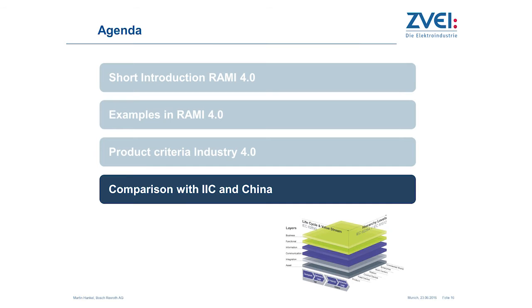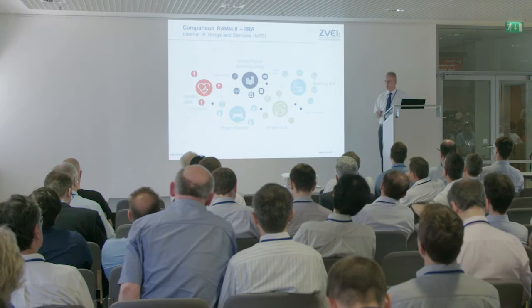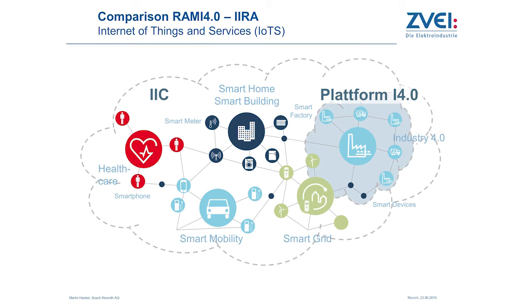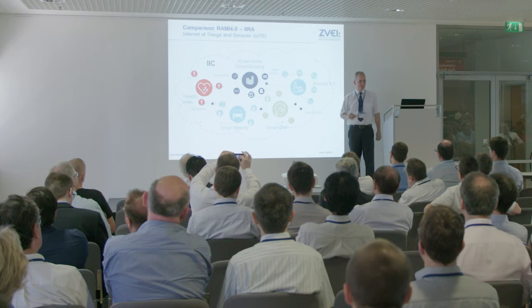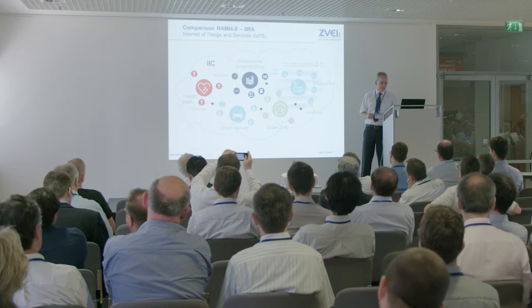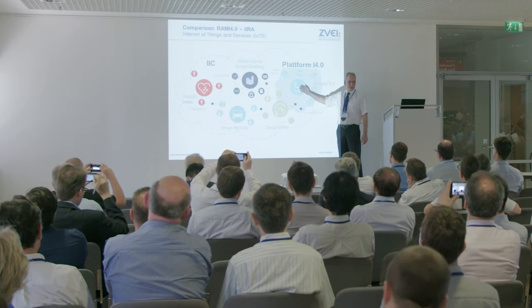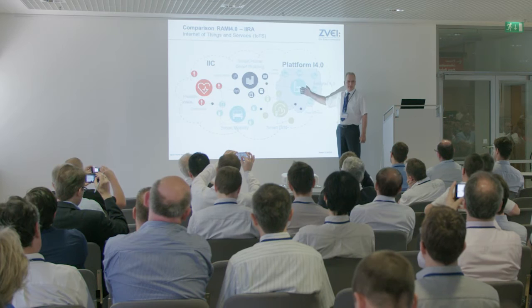The last topic: we've discussed Germany's reference architecture model, but what about the others — the other interesting countries in the world? Looking at the US, the IIC has a different perspective. The IIC looks at the Internet of Things and Services — everything: smart mobility, smart grid, smart building, smart healthcare, and also smart manufacturing as one of the domains. The IIC focuses on the whole world, wanting overall communication and data exchange across all these domains. Industry 4.0 focuses deeply inside the industry — only interested in manufacturing and smart manufacturing, going more deeply into specifications. That is the big difference.